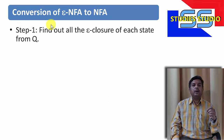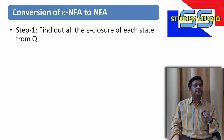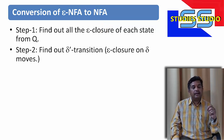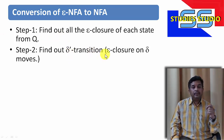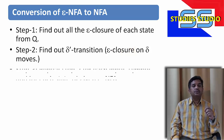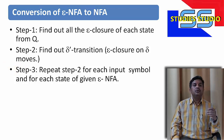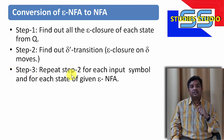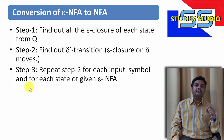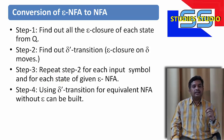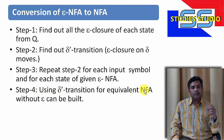The first step is to find out all the Epsilon closures of each state from the given Epsilon NFA. The second step is to repeat the process for each input symbol and for each state for the given Epsilon NFA. The fourth step is using the delta-dash transition, the equivalent NFA without Epsilon can be built.